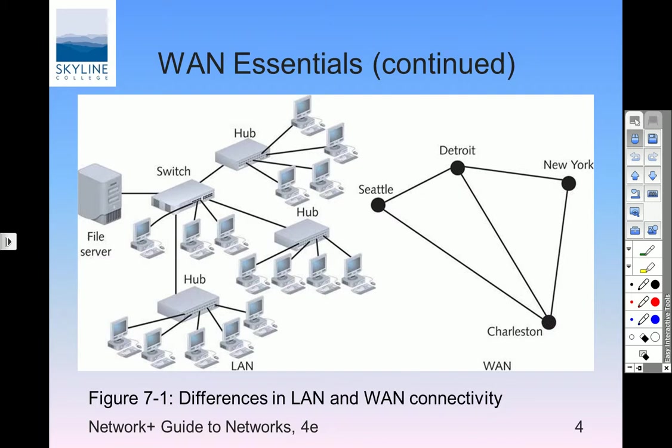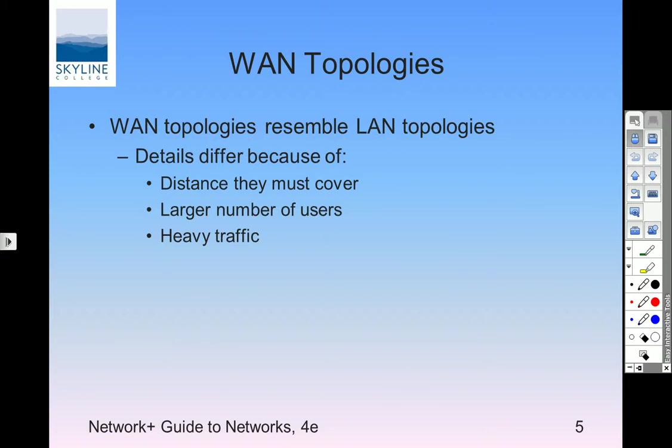How much bandwidth do you need? How much are you willing to pay for? LAN topologies — the distances, the number of users, how much traffic. In today's technologies the data rates are pretty high. Nobody really talks about T1s anymore for real — T1 is 1.544 megabits per second, not really all that fast by the numbers we're used to hearing. But what do you want to buy? How much do you need?